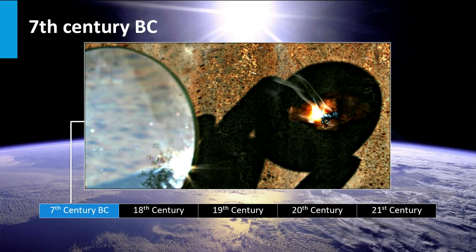As early as the 7th century before Christ, humans have used the first solar technology. They used magnifying glasses to make fire. Later the Romans and Greeks used concentrating mirrors for the same purpose as well.